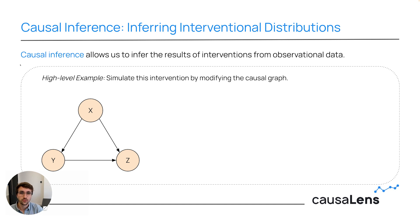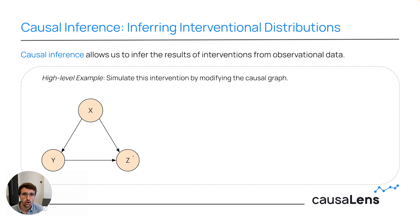So this is the main idea of causal inference — it allows us to infer the results of interventions from observation and data without doing the experiments. To explain how this works, I'd like to give you a highly vague example. The main idea is that we simulate an intervention by modifying the causal graph. Here we have the causal graph from before, and let's assume that Y is our marketing budget that we'd like to increase, Z is our revenue that we'd like to observe, and X are perhaps all the different factors that affect each of these.